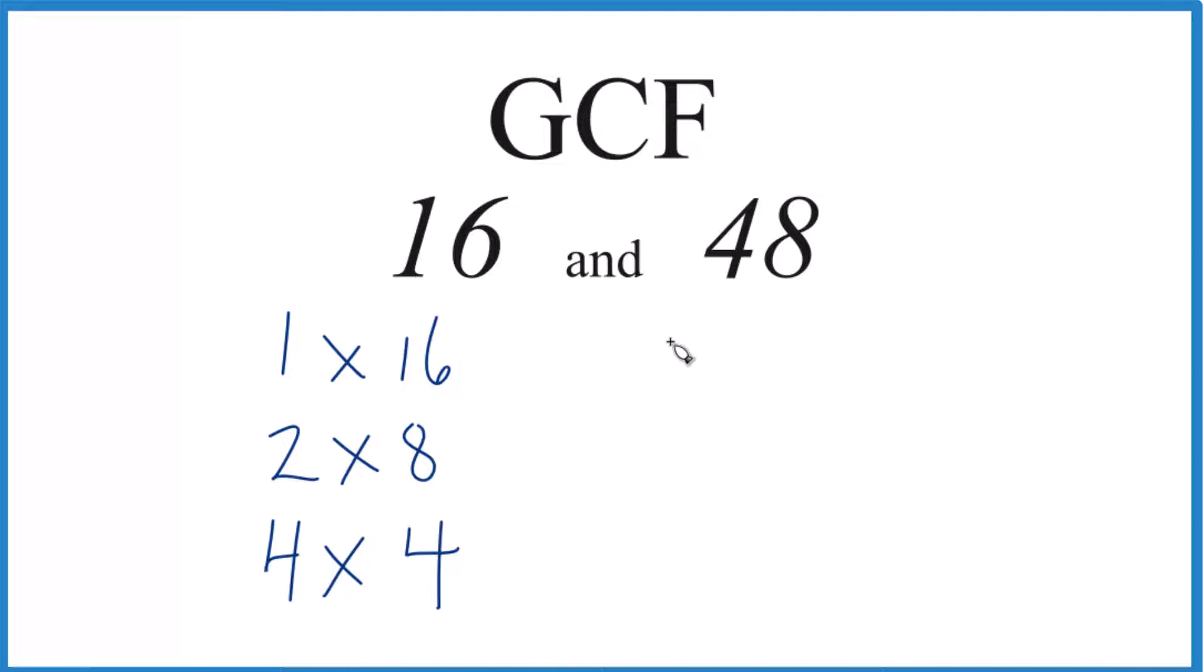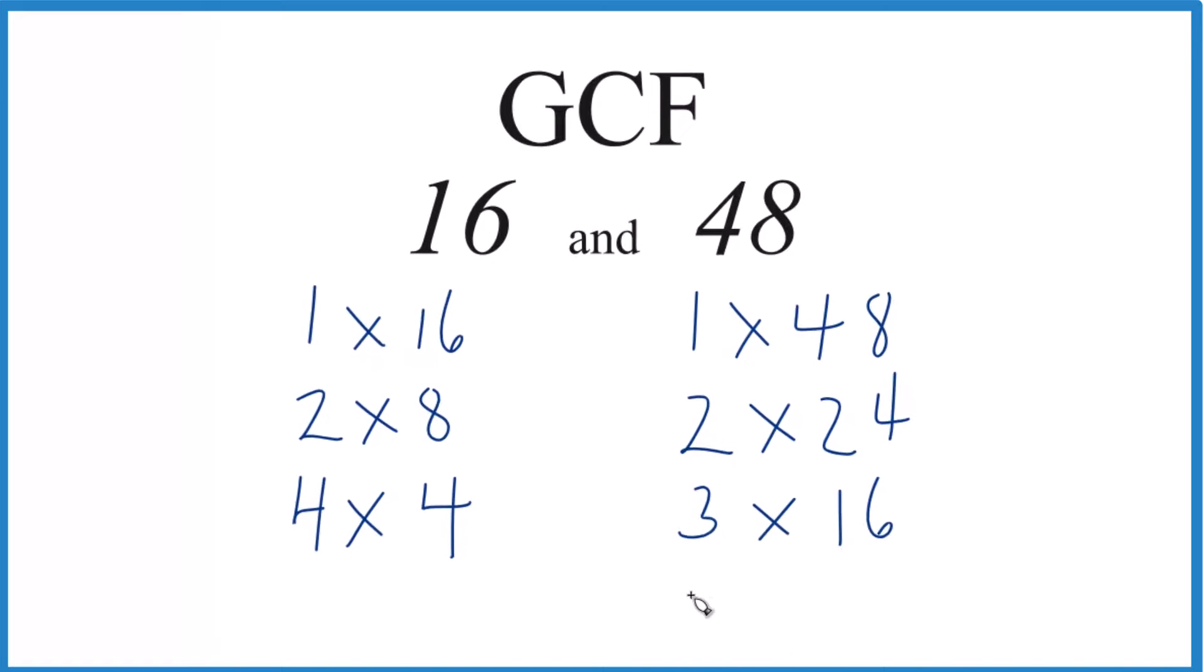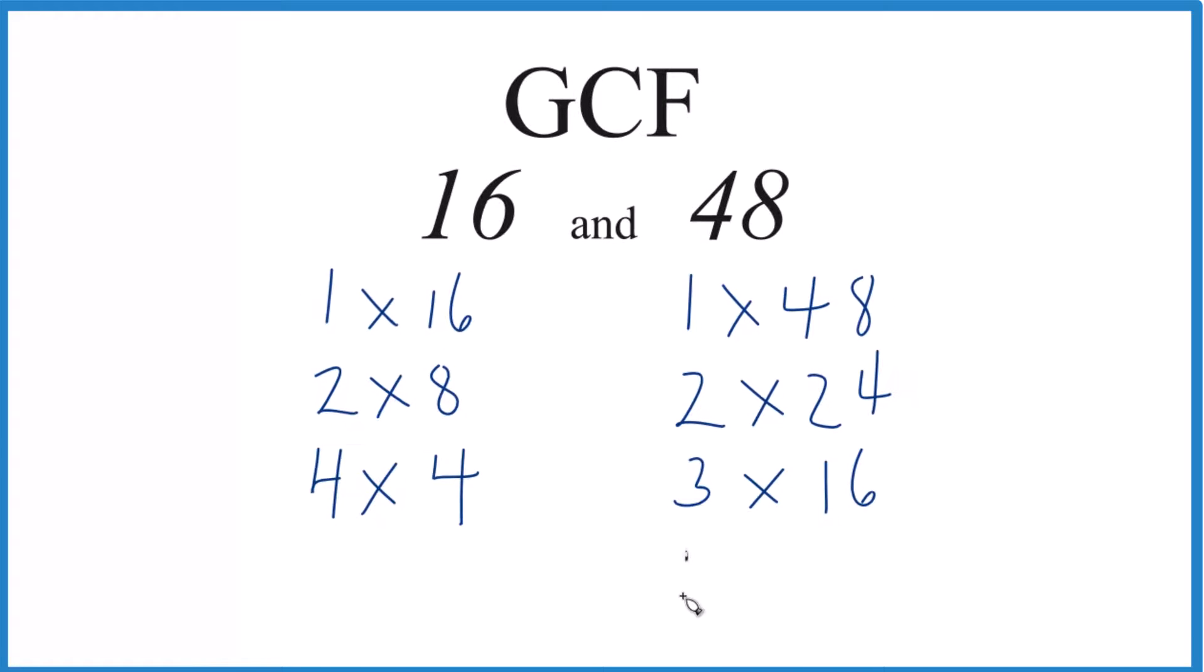Then we can look at 48. We have 1 times 48, there's a lot of them. 2 times 24, that's 48. 3 times 16, that's 48. Then 4 times 12, that's 48. And then finally, 6 times 8, that's 48. So we went through all these factors here. We have them for 16 and for 48.